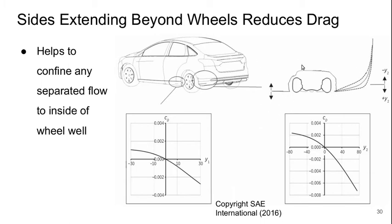What you see at the top is a top-down view of one of the wheel wells sliced through the tire. You can see the tire, the rim shapes, and the hubcap. This is the wheel well shape we're discussing. It's extending the Y2 value on the back side, and Y1 is ahead of it. The trend is the same in both cases: as we bring Y1 and Y2 out beyond zero — where zero is flush with the edge of the tire — we actually get a reduction in drag.